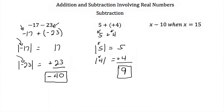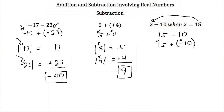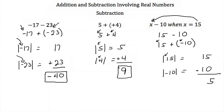Let's look at our last problem. Here we have x minus 10 when x equals 15. We put 15 in for x, giving us 15 minus 10. Convert to addition: this is 15 plus a negative 10. We have two numbers with different signs, so we subtract their absolute values: the absolute value of 15 is 15, the absolute value of negative 10 is 10. We subtract and get 5. The largest absolute value, 15, comes from a positive number, so this is positive 5.